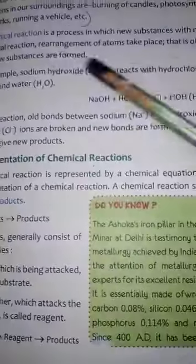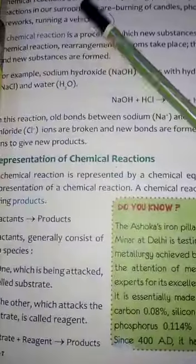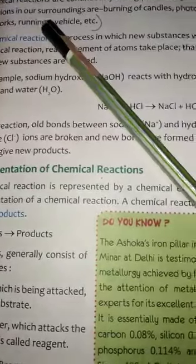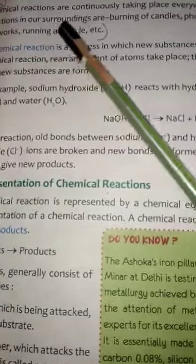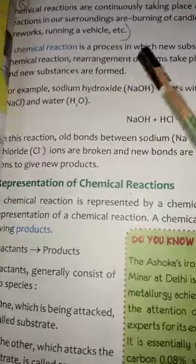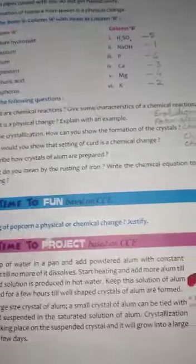The heading is Chemical Reactions. This is the first part. Chemical Reactions include examples such as running a vehicle. In the second part, you will write the characteristics.